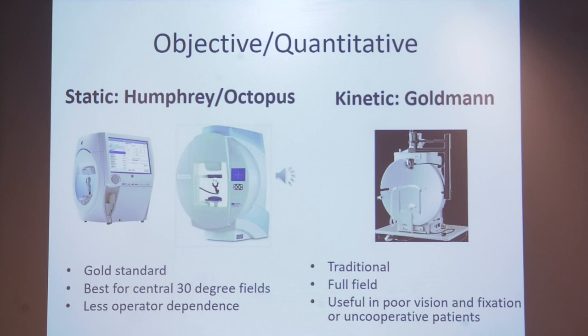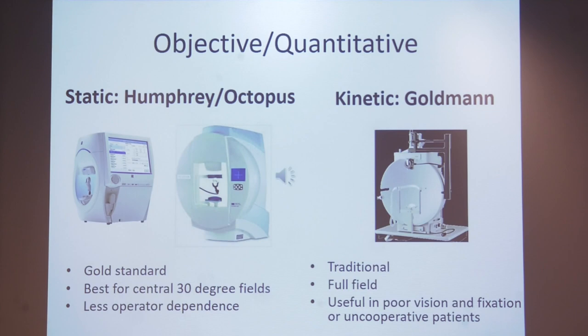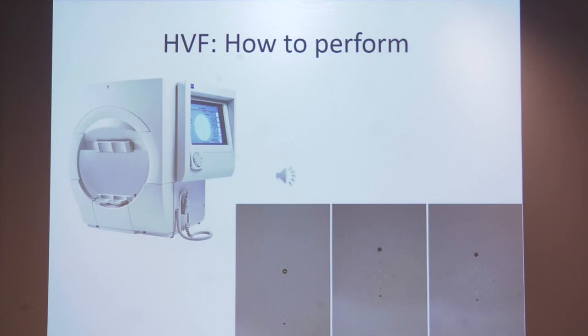In this presentation, we will focus on the static perimeter of the octopuses. This is a gold standard for perimetry for the central 30 degrees field of view. Before coming to the interpretation of the perimetry printout, I will briefly explain to you how to perform a static perimetry.